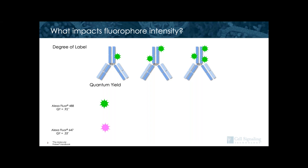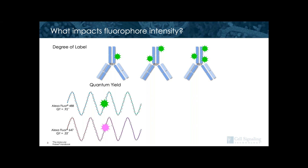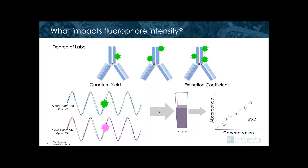Another factor that impacts fluorophore brightness is quantum yield. This is a ratio that looks at how many photons are absorbed by the fluorophore and how many photons the fluorophore is able to emit. You can see here that Alexa Fluor 488 has a much higher quantum yield than Alexa Fluor 647. The other thing that impacts fluorophore brightness is the extinction coefficient — the capacity that the dye has for absorbing light. This can be calculated using the Beer-Lambert law by examining fluorophore absorbance at various concentrations. Quantum yield and extinction coefficient together determine how bright the fluorophore will be.